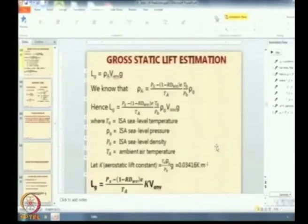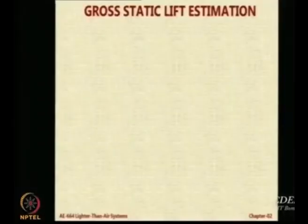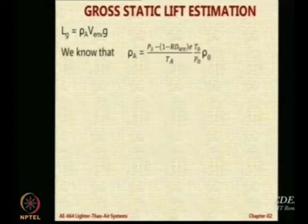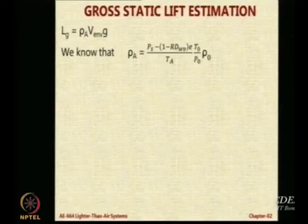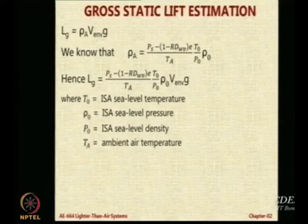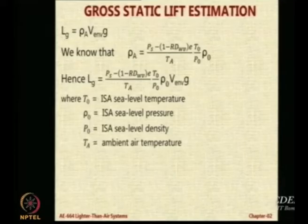The next concept to cover quickly is static lift. The gross lift is rho_A into V_envelope into g — we have already seen this. So Lg will be that same expression with V and V into g. This is how you calculate the gross lift — the same formula with V_E and V into g at the end.